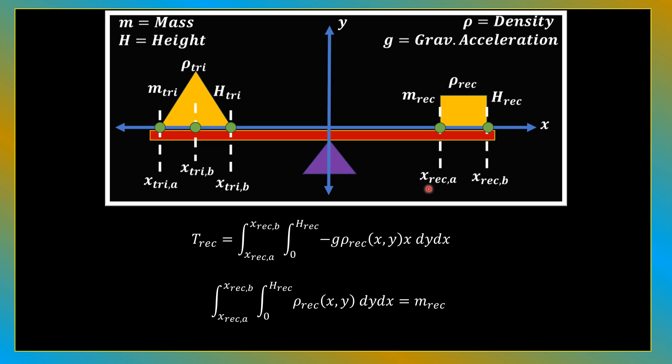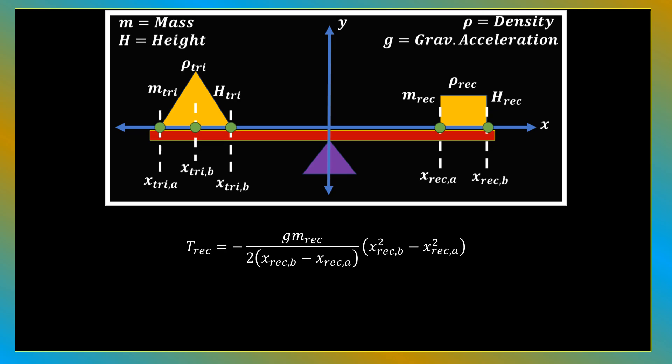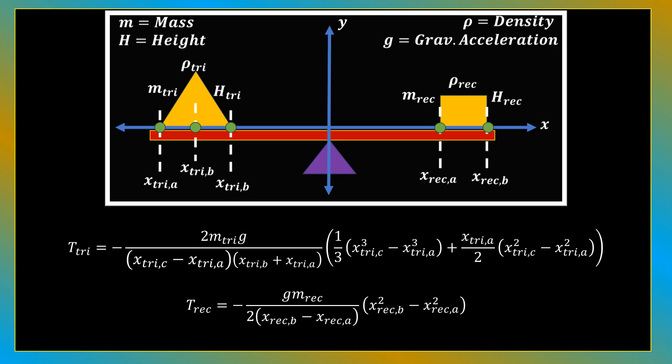So we can do the same thing for the torque contributed by the rectangle. The only difference is that we integrate over the rectangular area. We have the torque T_rec contributed by the rectangular mass, and the equation for its mass. We get this condensed expression for torque contributed by the rectangle as a function of the mass of the rectangle, gravitational acceleration g, and the two points on the rectangle specified in the diagram: x_rec_a and x_rec_b.